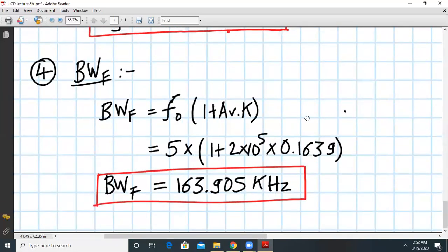Now last is the bandwidth with feedback. So the bandwidth with feedback is given by the formula F0 into 1 plus K times Av. So if you work it out in a calculator, you will get an answer close to 163.9 kilohertz.